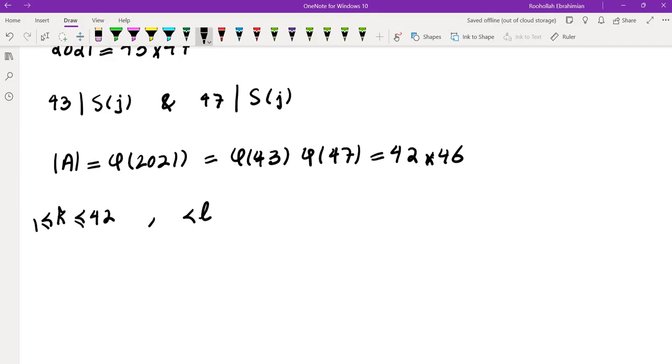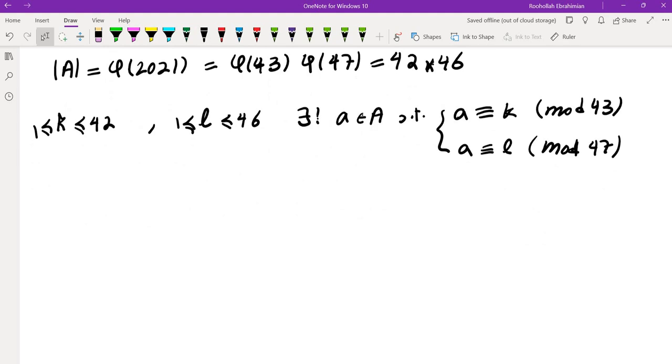It means if I take some K between 1 and 42, and some L between 1 and 46, there is a unique element A in the set such that A ≡ K (mod 43) and A ≡ L (mod 47). This follows from the Chinese Remainder Theorem.